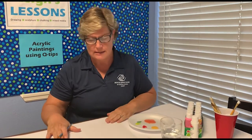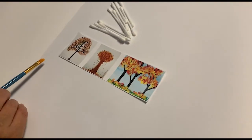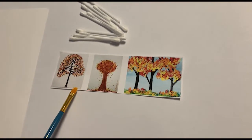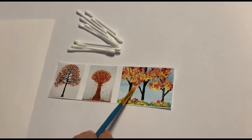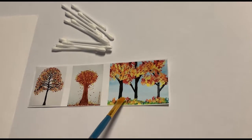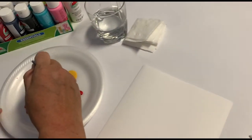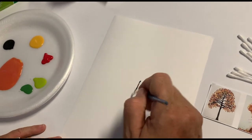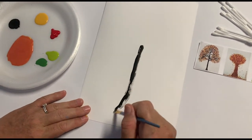Hi everyone, it's Ms. Lee, and this is another episode of Lee's Lessons. Today we are going to do painting using Q-tips. The best thing is if you have some sort of reference material. I looked at some Q-tip pieces other people had done, and I like how they look for fall. I'm going to do one tree like this — the tree — and I like having the ground there as well. I have a brush because the brush makes it easier to at least do the tree. I'm going to take the brush and make my tree trunk.